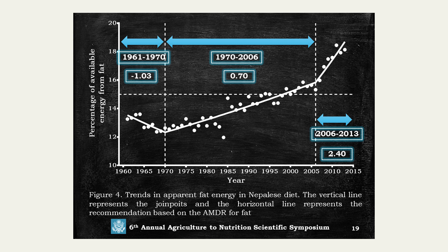In the case of fat energy, we extracted three phases. From 1970, there is a very sharp increase where the annual percentage change was 0.7. Just after 2006, the annual percentage change was 2.40 — a very large change in fat energy in the Nepalese diet.